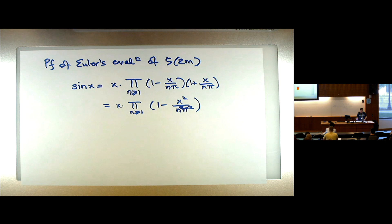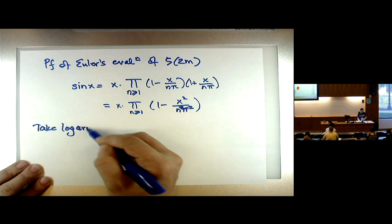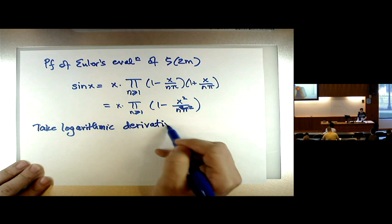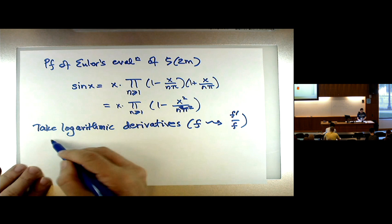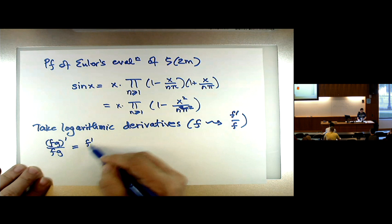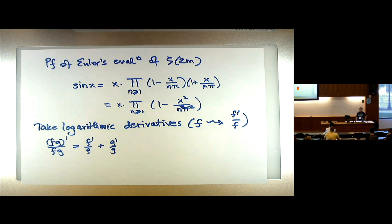How does this help with the sum of reciprocal powers? Euler's idea was to take logarithmic derivatives. The logarithmic derivative of a function: you take your function and replace it with f′/f. It would be the derivative of log f if log f made sense, but even if it doesn't, f′/f still makes sense if f is not zero. If you take the logarithmic derivative of a product, it's the sum of the logarithmic derivatives — that's just the product rule if you clear denominators.